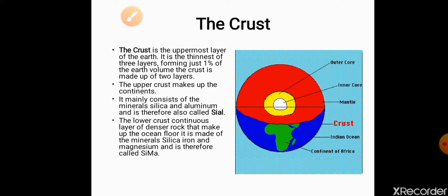The crust is made up of two layers: the upper crust and lower crust. The upper crust makes up the continents — sare continents upper crust mein paye jate hain. It mainly consists of the minerals silica and aluminium, and is therefore also called SIAL. Is parat mein minerals yani khanij paye jate hain jisme main silica aur aluminium hain — isi wajah se is layer ko SIAL ka naam diya gaya hai. SIAL is a word which is a combination of four alphabets: SI stands for silica and AL stands for aluminium.